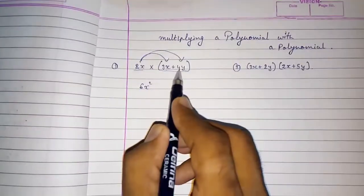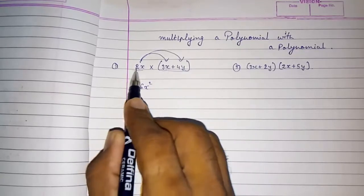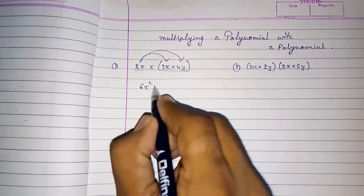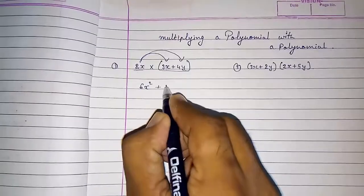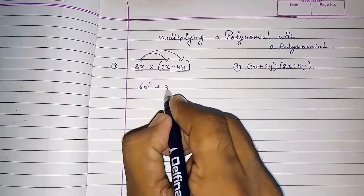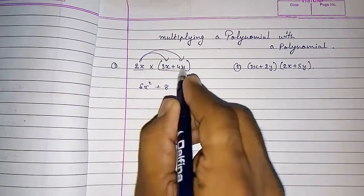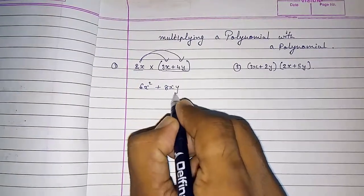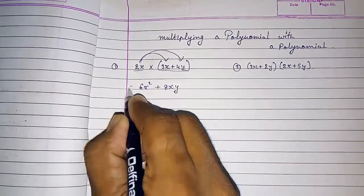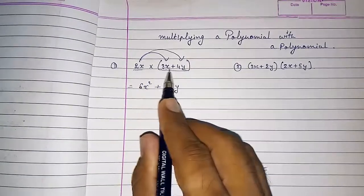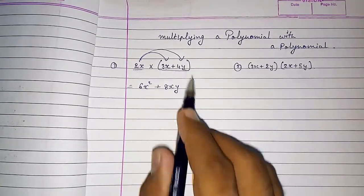Then again multiplying with the next term. So 2 into 4, plus sign is there, so plus 2 into 4 is 8. And x into y is xy. So we get 8xy. This was multiplying a monomial with a binomial.